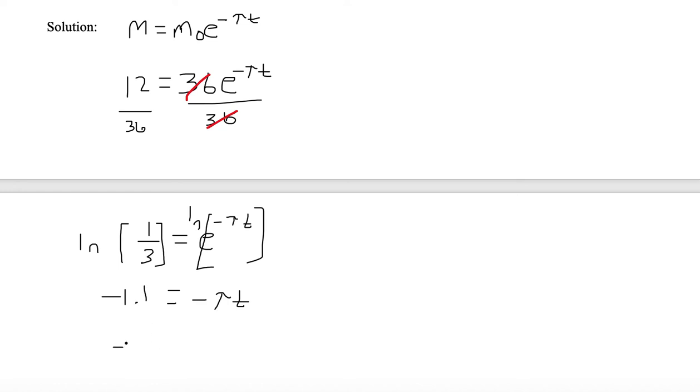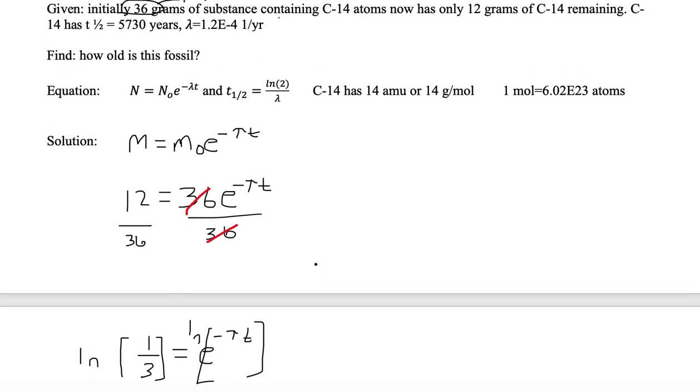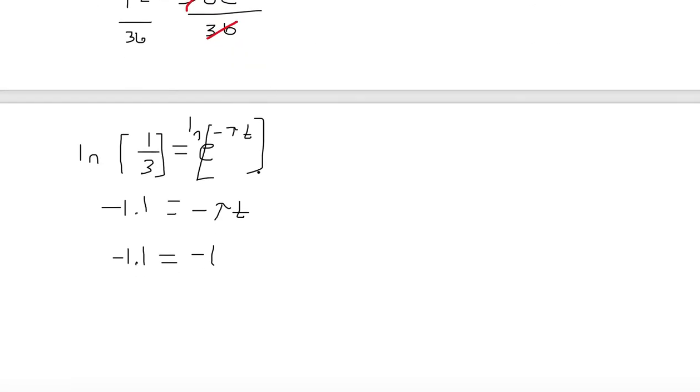Now let's substitute everything in. We've got minus 1.1 on the left-hand side, no units, as our units of grams canceled out. And we have minus lambda, our lambda value we're given is 1.2e-4, and I'm going to put it as times 10 to the minus 4. So we can see that our negatives canceled out, so let's make them positives. And now we need to divide both sides of the equation by 1.2 times 10 to the minus 4.